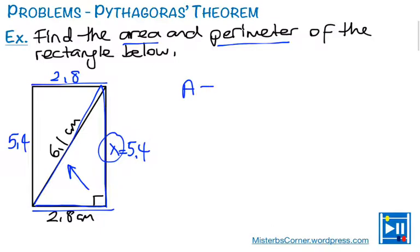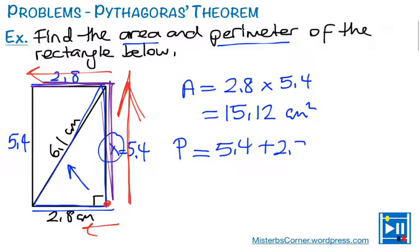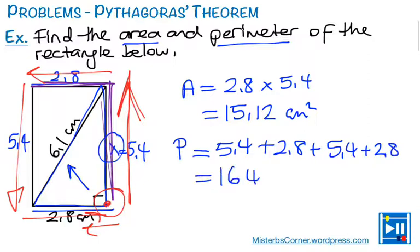So area will be 2.8 multiplied by 5.4. I just multiply the adjacent sides, and the answer will be 15.12 centimeters squared. And for perimeter, I have to add the side length. So it will go like, it doesn't matter which corner you start with. I choose this one. You could choose any other corner, vertex, and it doesn't matter which direction you go. I'll go like this. So it's 5.4 plus, now I go this way, 2.8 plus, now I go this way, 5.4 again, plus, I go this way to reach where I started. So it's 2.8 again, and the answer will be 16.4 centimeters.